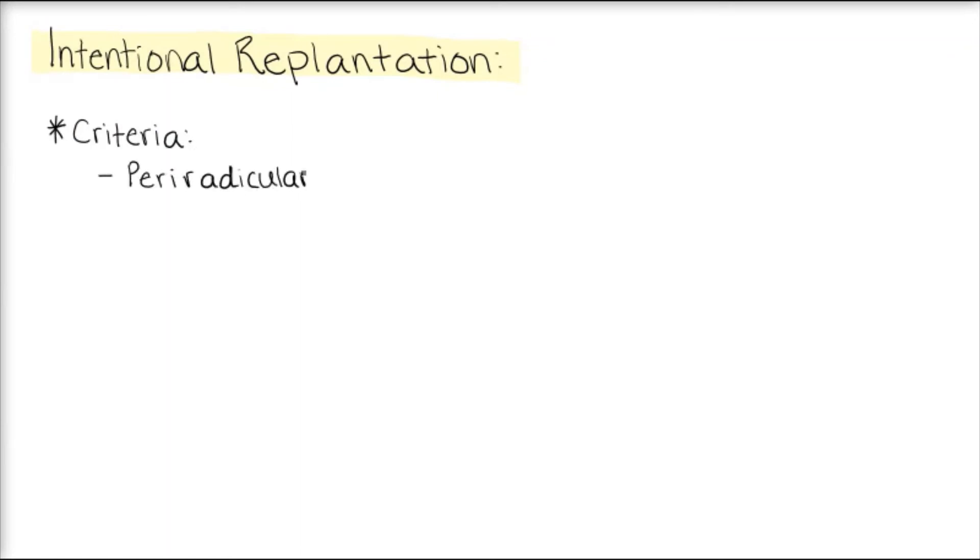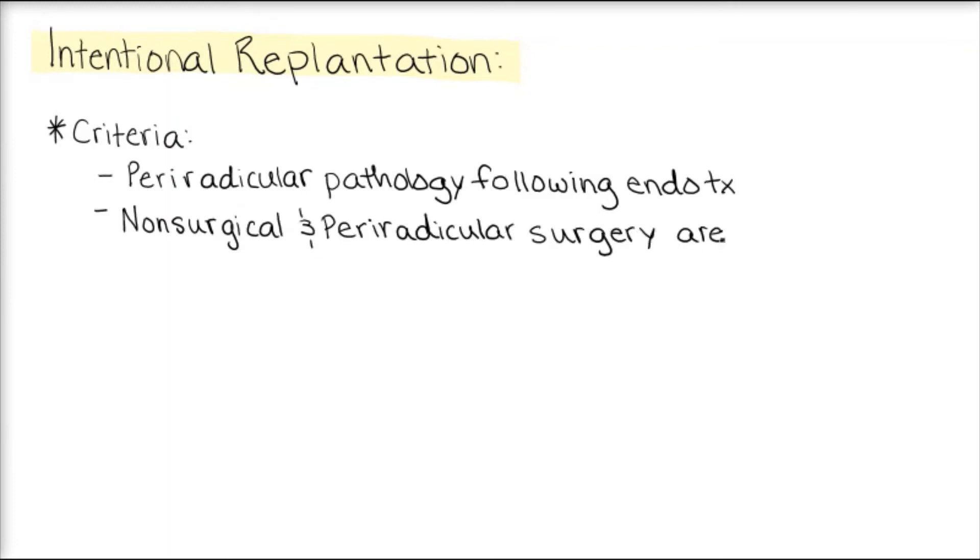The next procedure we'll cover will be intentional replantation. To be considered, this case must meet all of the following criteria. It must have periradicular pathology following endodontic treatment, where non-surgical and periradicular surgical treatments are not possible or have a poor prognosis, for example due to adjacent anatomical structures.